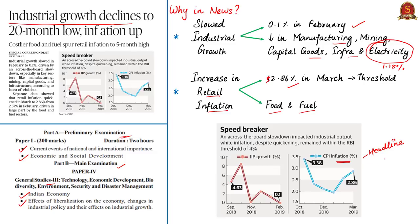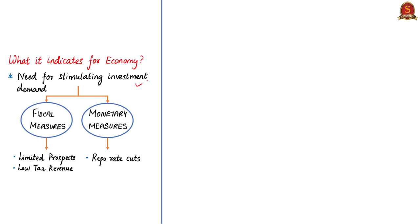However, CPI is well below the RBI threshold of 4%. The article also highlights what these changes indicate for the economy — a need for stimulating investment demand through monetary and fiscal measures. On the monetary side, steps have been taken through two successive rate cuts by the RBI. On the fiscal side, however, the prospects were limited, because there is a shortfall in both direct and indirect tax revenue collections in the revised estimates. The government has also been pushing for curtailing expenditure in general and capital expenditure in specific in order to meet fiscal deficit targets.